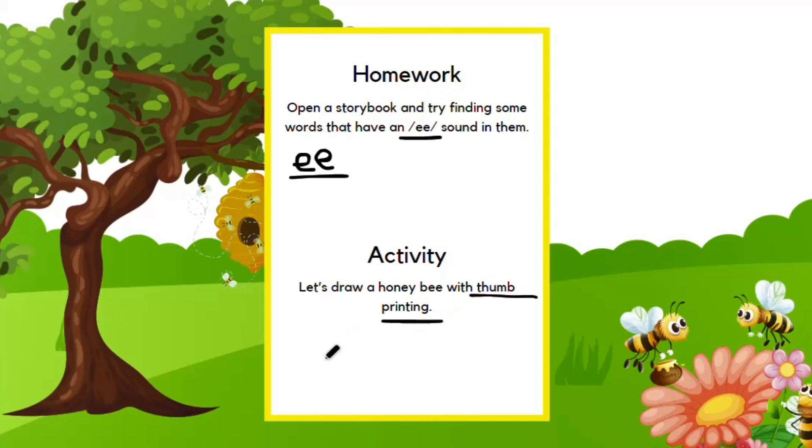Next we have an activity. It's the thumb printing activity. You need to dip your thumb in yellow or black color, paste it on a piece of paper, and then if you have dipped it in yellow, draw some black lines on it and then make two eyes here, two antennas and the wings, and your bee is ready. You can make as many bees as you want.